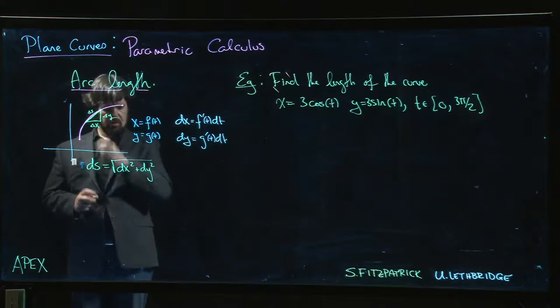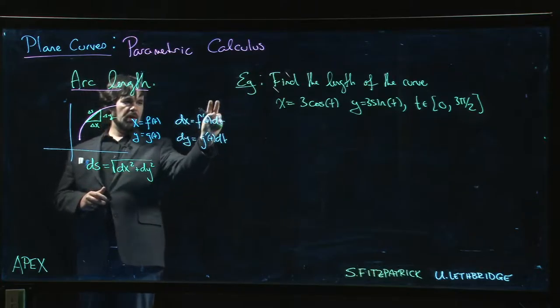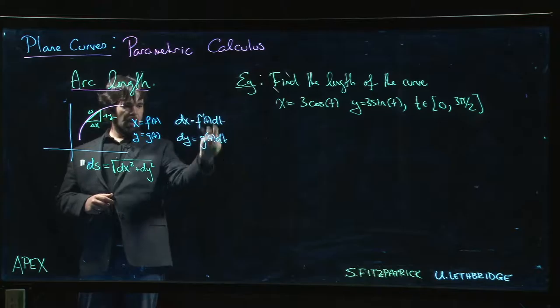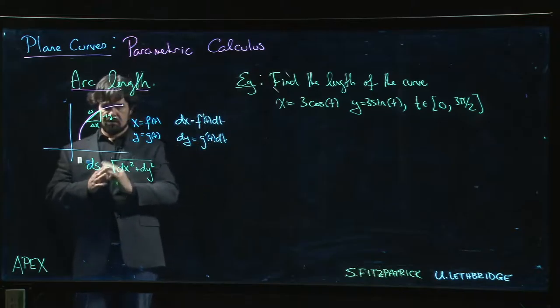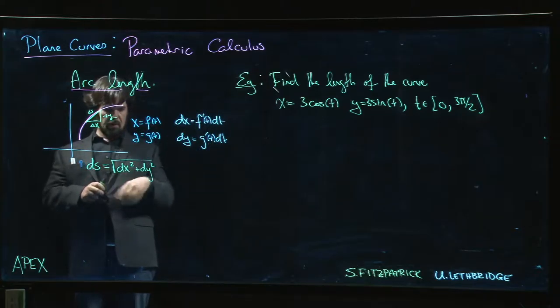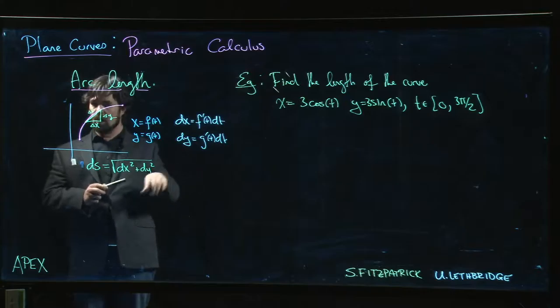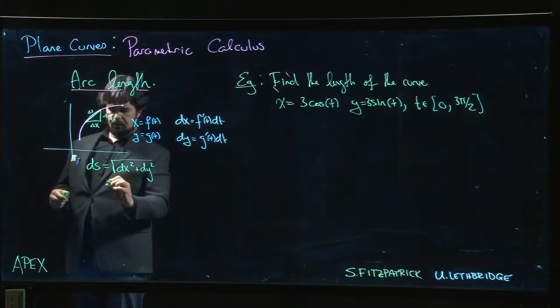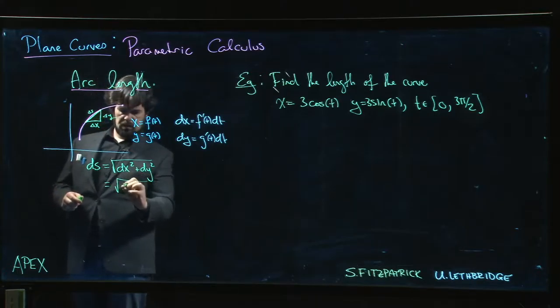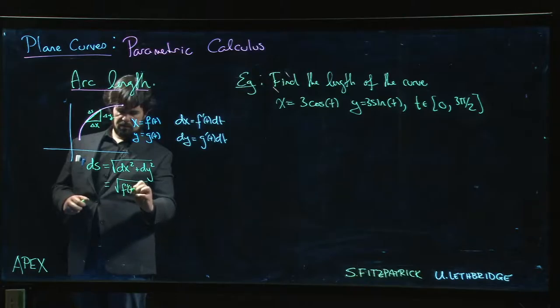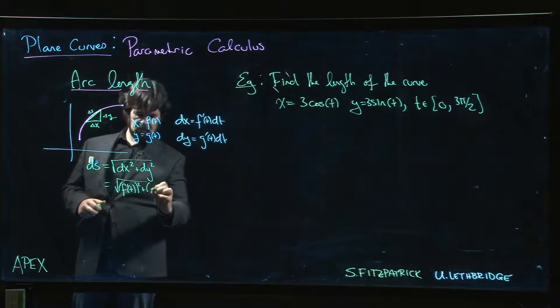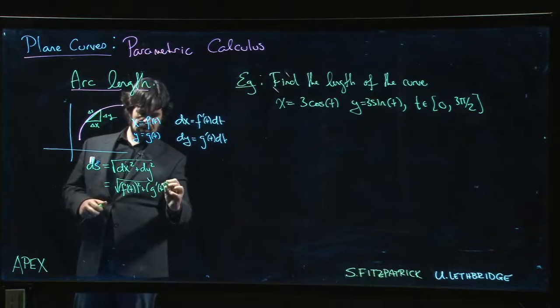What is dx squared plus dy squared? Well it's going to be f prime squared dt squared plus g prime squared dt squared. Factor out that dt which is common - square root of dt squared is dt again. Not rigorous, but it's a notational trick that gets us to where we need to be: f prime squared plus g prime squared.